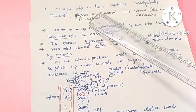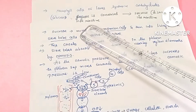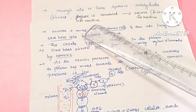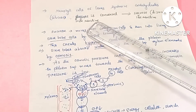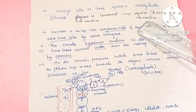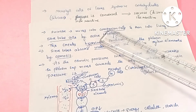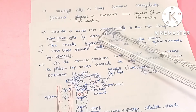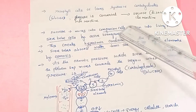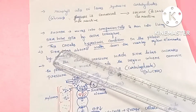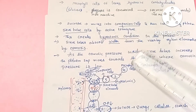Glucose is a monosaccharide which is more reactive. Sucrose is a disaccharide and is less reactive than glucose. In phloem sap we have sucrose, so glucose is converted to sucrose. This sucrose is then used in the companion cells, which we will explain with a picture.